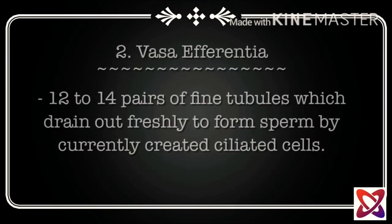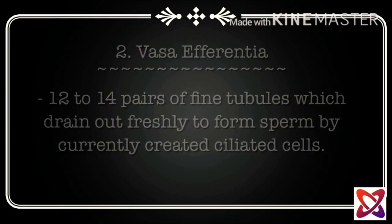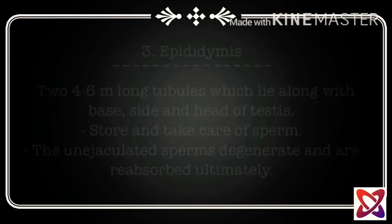Now let's move to the second component, that is vasa efferentia. The 12 to 14 pairs of fine tubules which drain out freshly formed sperm, created by ciliated cells, are the vasa efferentia. The third component is the epididymis.